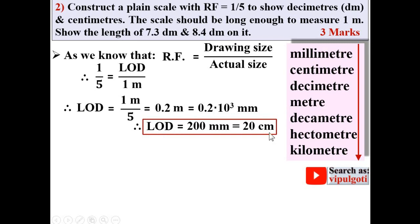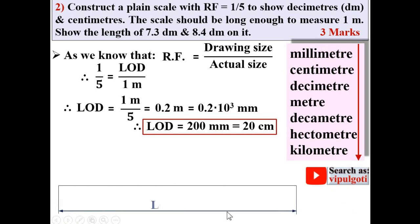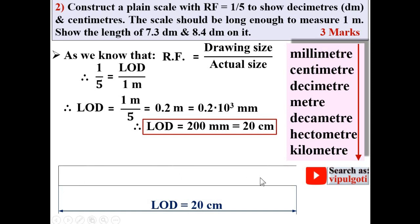Once we have the length of drawing, we can start drawing the scale. The length of drawing is 20 centimeters, so draw a line up to 20 centimeters. Mark the extension lines and dimension line. Note that LOD = 20 cm. Then draw the height of the scale — generally preferred as 10 mm or 1 centimeter — and complete the rectangle, which represents the scale.